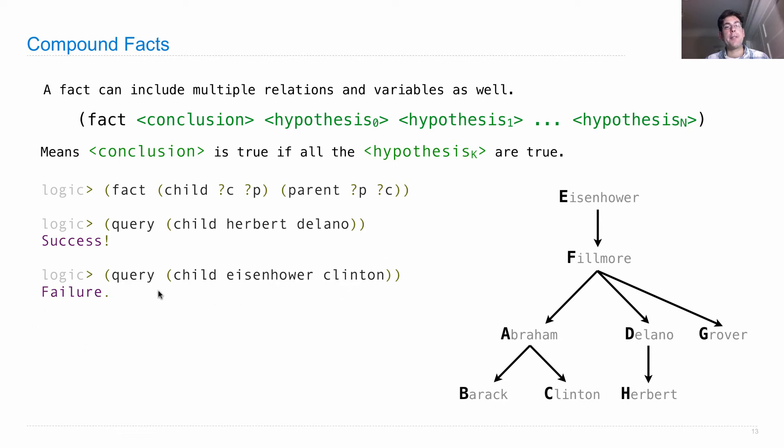The logic language is mostly in the business of telling us what's true and what's false based on the simple facts that we created by just having conclusions and also the compound facts that tell us how to derive new facts from the facts we already know.